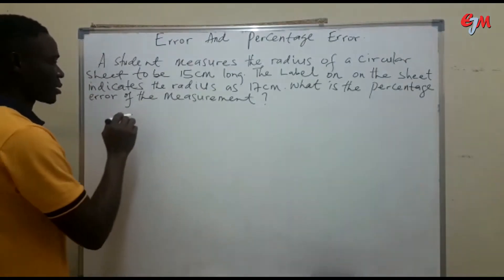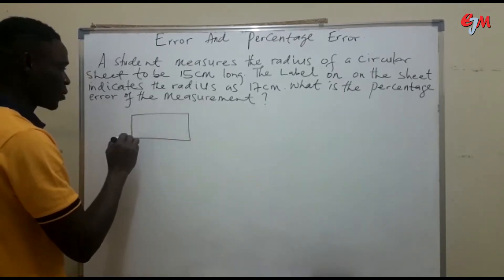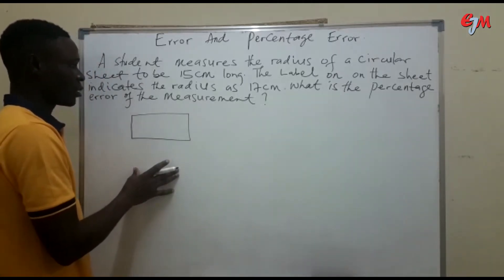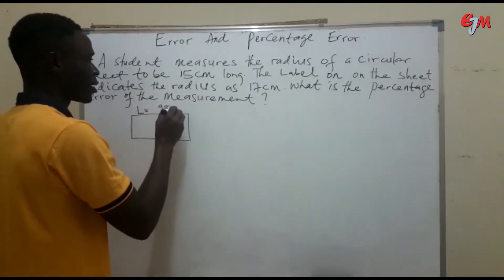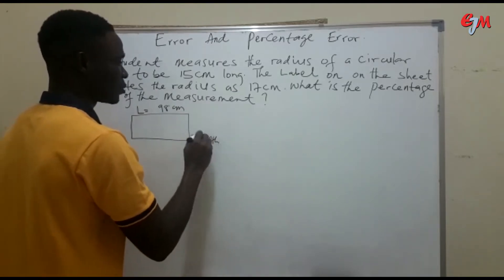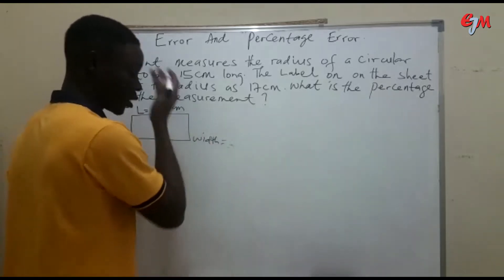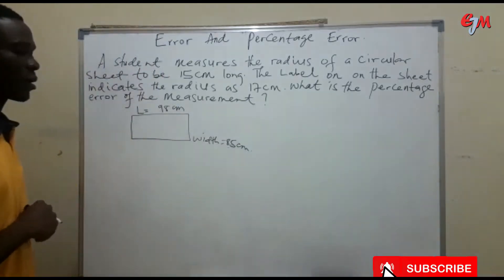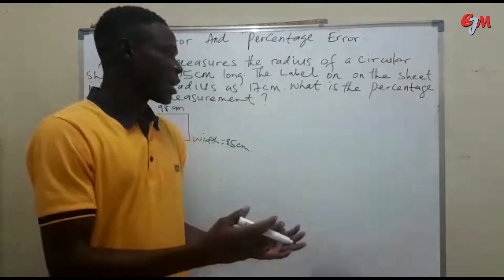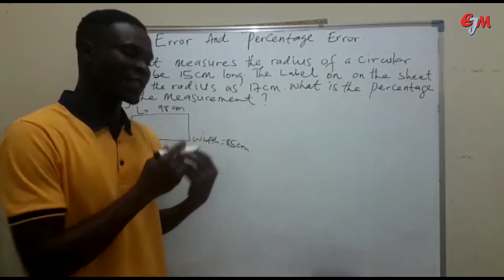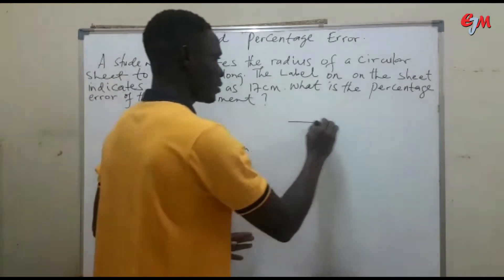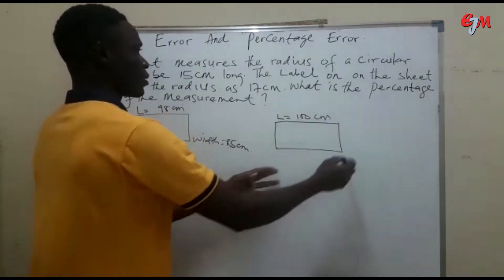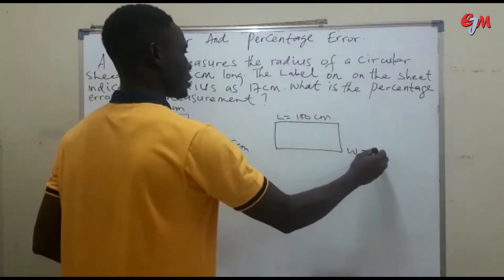Let us assume that this is a football field. The original measurement of this football field is: length was 98 cm, and width was 85 cm. Another player remeasures the same football field and got a different value — he got the length as 100 cm and the width as 90 cm.